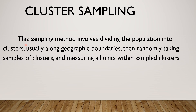The fourth type is cluster sampling. This method involves dividing the population into clusters, usually along geographic boundaries such as north, east, west, south, barangays, or cities. We then randomly select clusters and measure all units within those sampled clusters. So we choose a cluster and take its entire population as our sample.